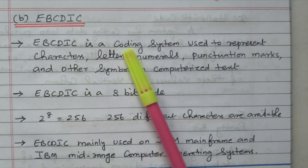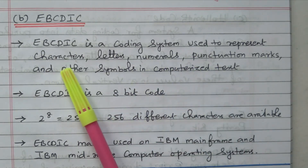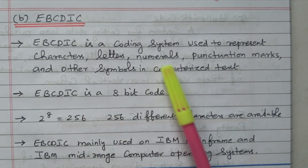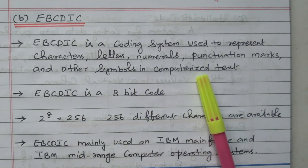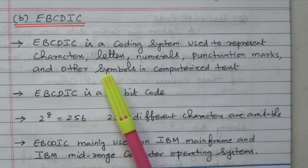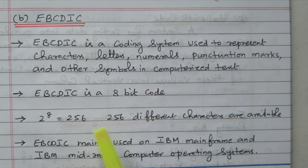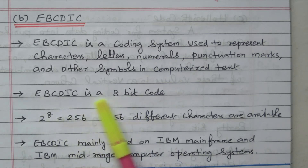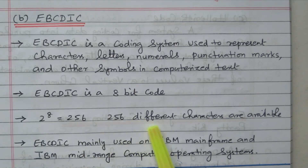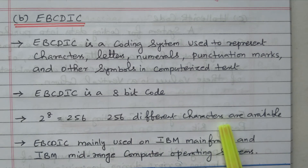EBCDIC is a coding system used to represent characters, letters, numbers, punctuation marks, and other symbols in computerized text. It is an 8-bit code. The ASCII code is a 7-bit code, whereas EBCDIC is an 8-bit code. So 2 to the power 8 gives us 256 different characters. In ASCII, we can represent only 128 characters, but in EBCDIC we can represent 256 characters.